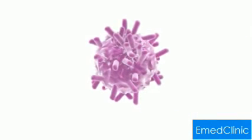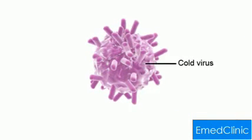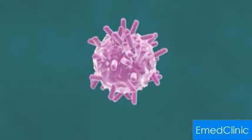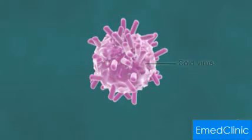Cold viruses such as the rhinovirus and coronavirus are taken into the body when you breathe them in from the air, or when you touch surfaces which have the virus on them and then touch your mouth, nose or eyes. You can also get cold viruses from close or direct contact with someone with the virus, by kissing someone with the virus, for example.